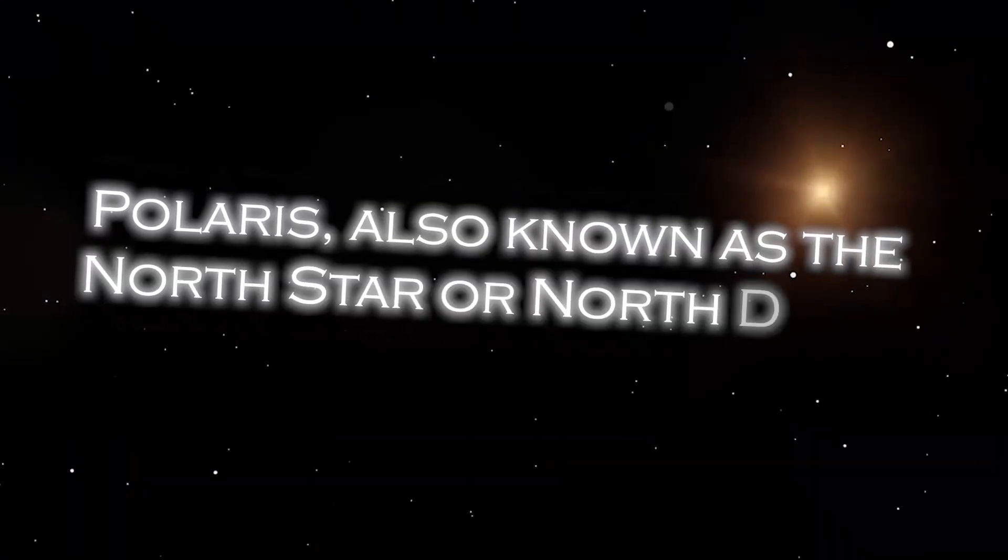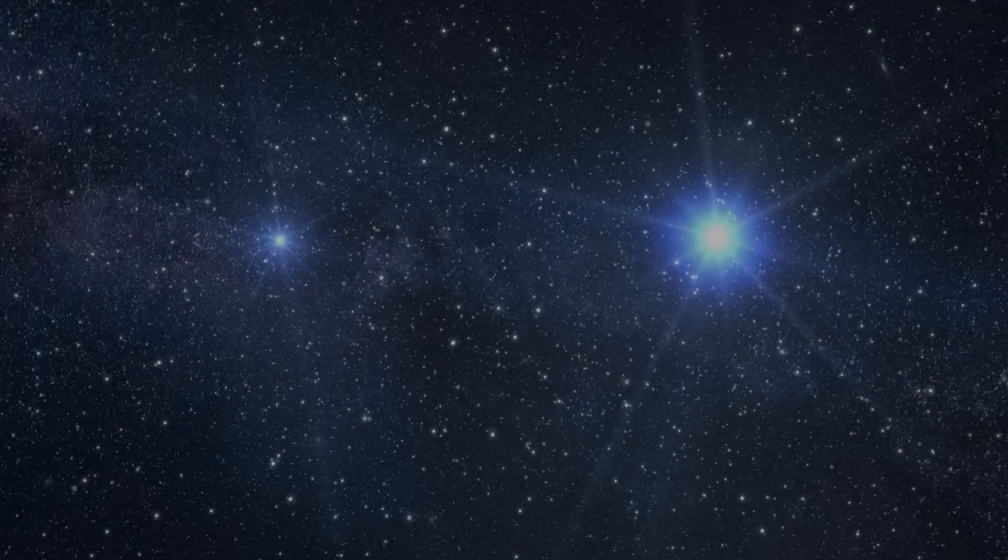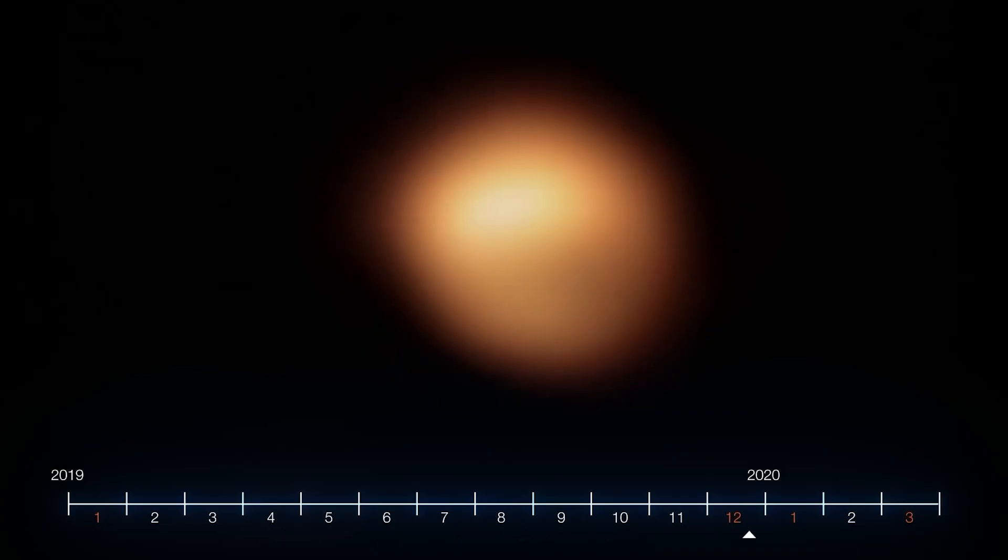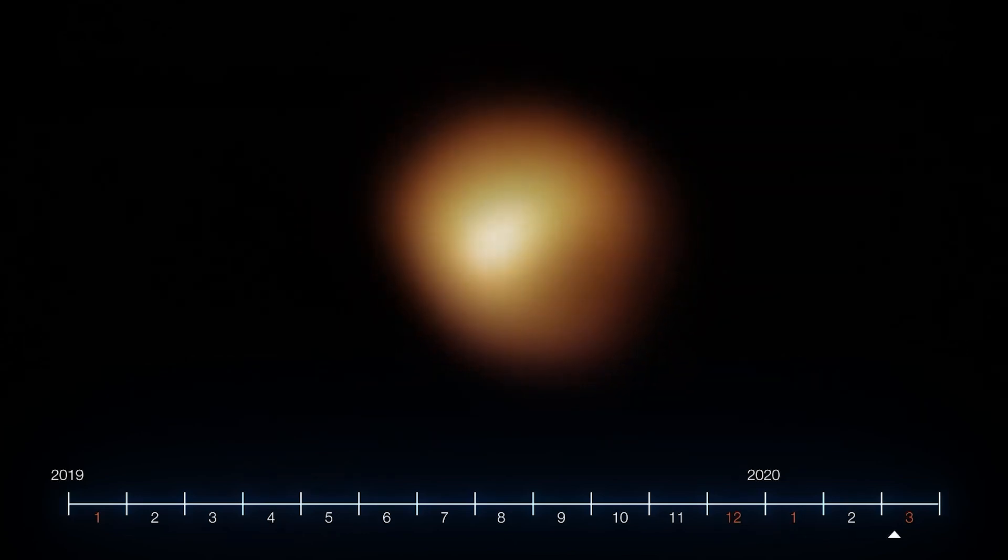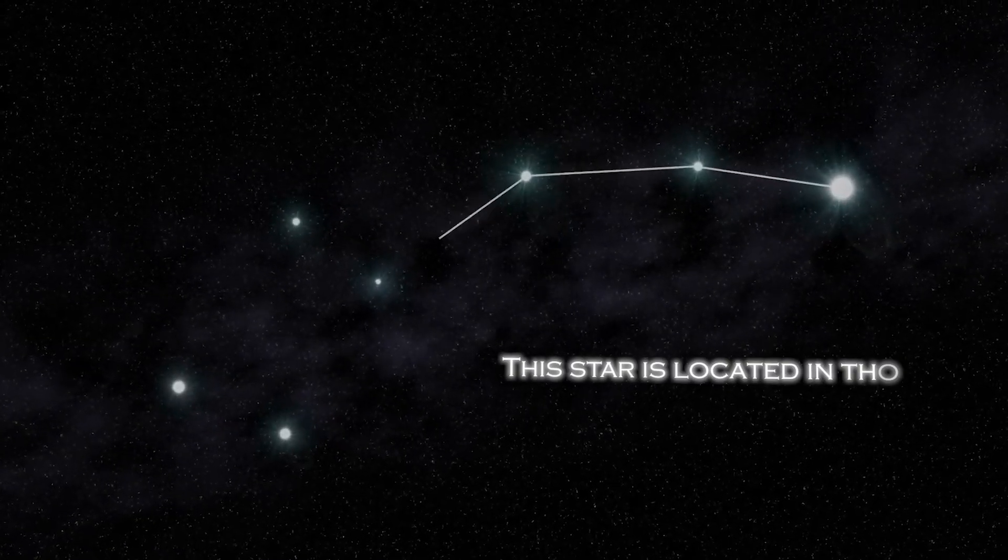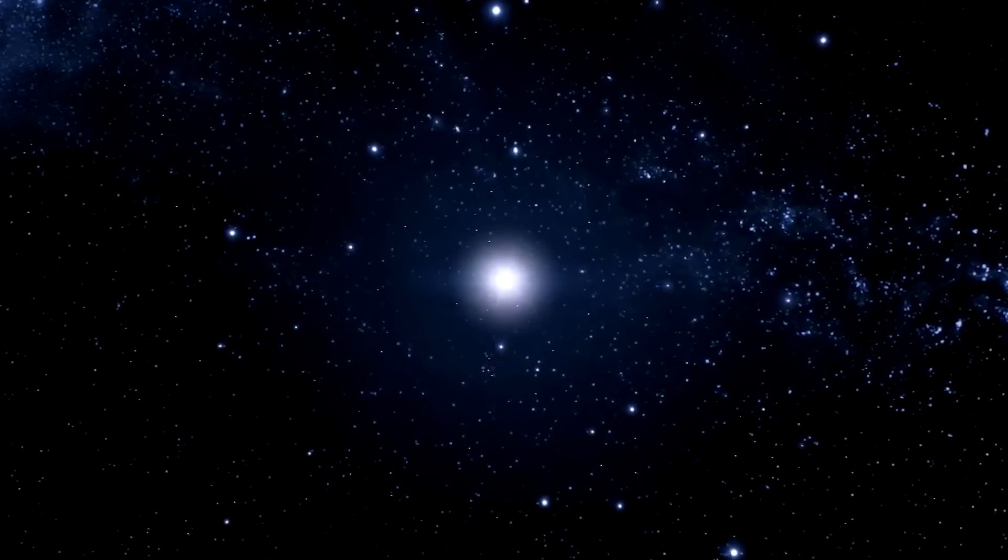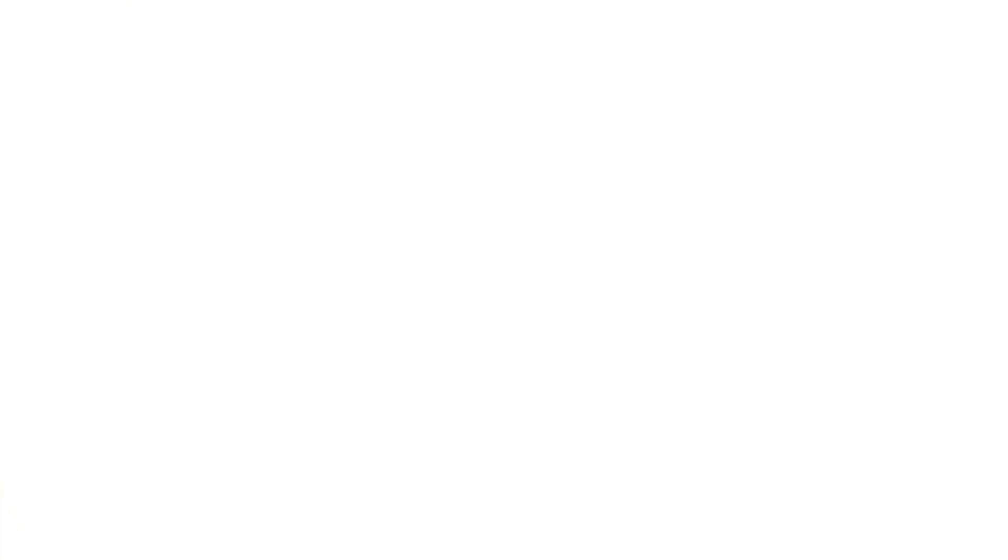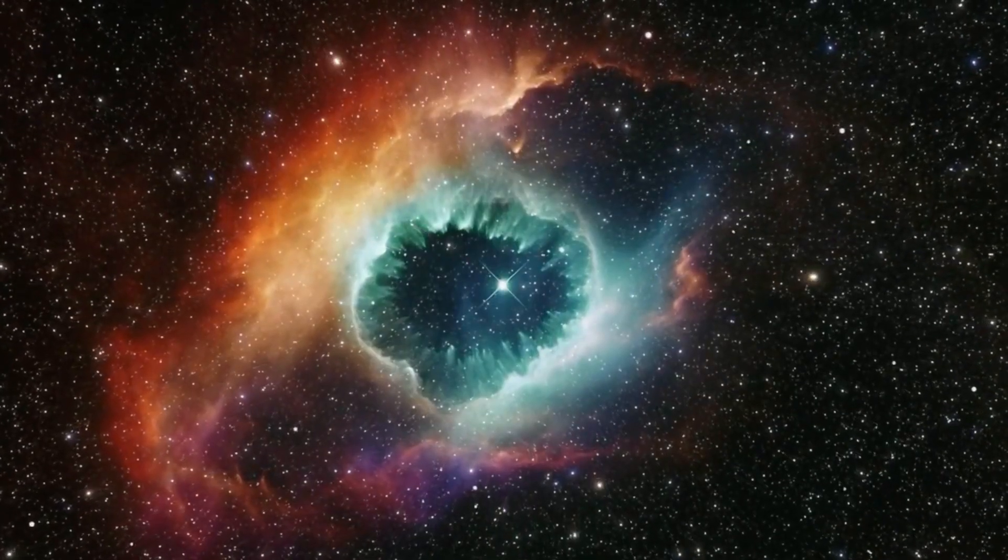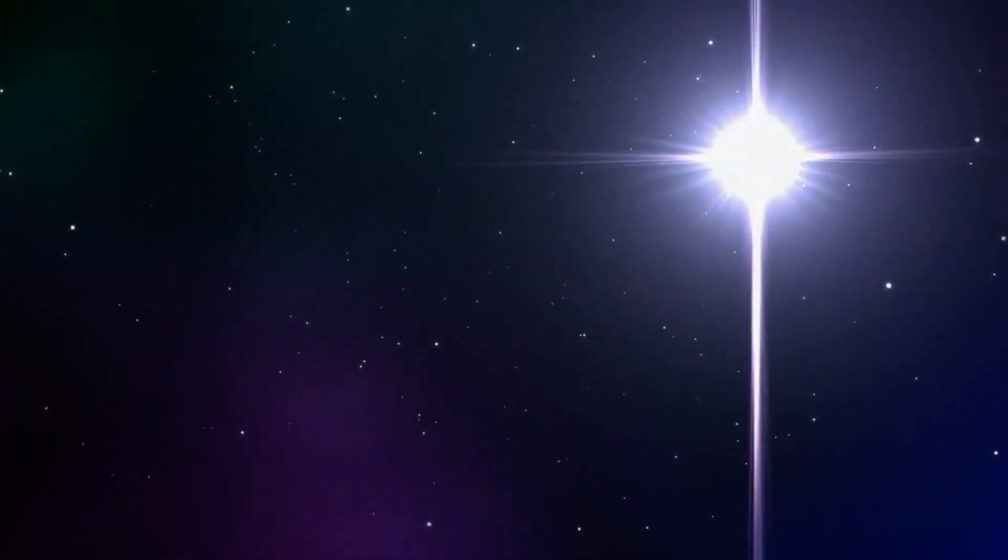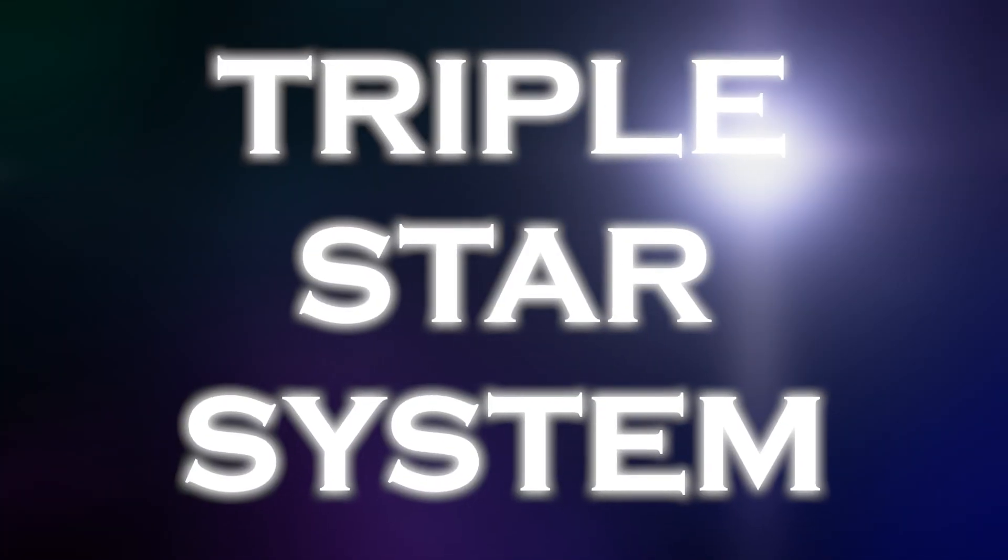Polaris, also known as the North Star, occupies a special position in the sky because of its proximity to the celestial North Pole. It is almost directly over Earth's North Pole, which gives the illusion that it remains static in the northern sky. The star is located in the constellation Ursa Minor. Polaris is a star of moderate brightness that stands out as a yellow-white supergiant of considerable dimension compared to our Sun. Despite its appearance as a lone star, it is actually part of a rather complex triple star system.